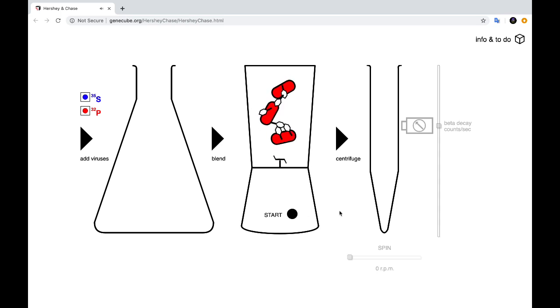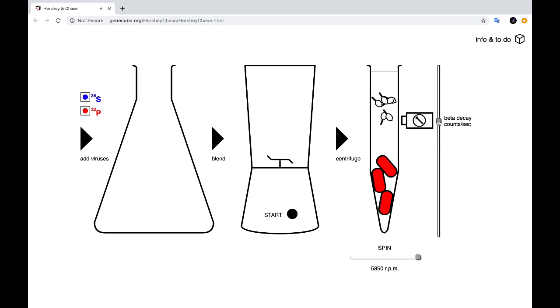We then separate off again the protein coats of the virus from the bacteria using the blender and use the centrifuge to separate once again the protein coats of the virus into the supernatant at the top and the bacteria are left at the bottom. Now if we use the sensor this time, we will find that there is very little to no radioactivity detected in the supernatant at the top.